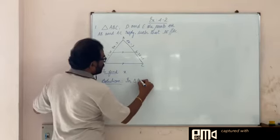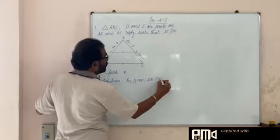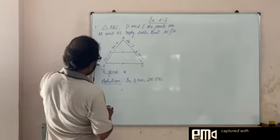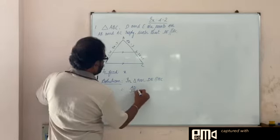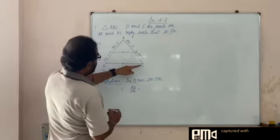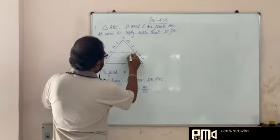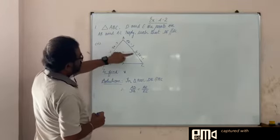In triangle ABC, we have DE parallel to BC. Therefore we have this description: AD by DB is equal to AE by EC.